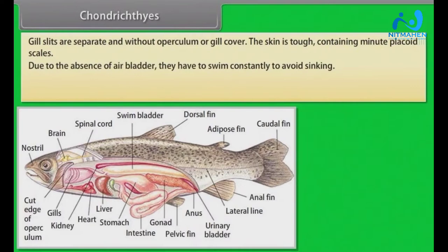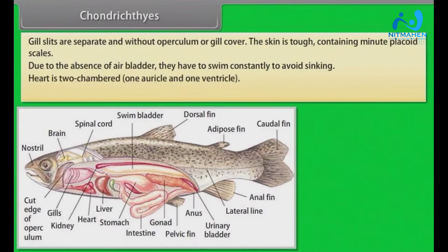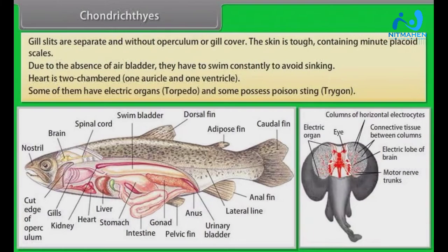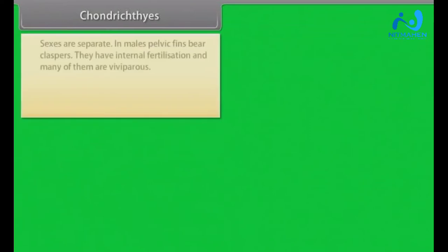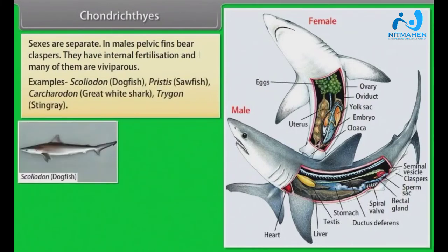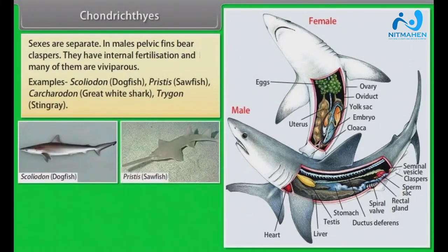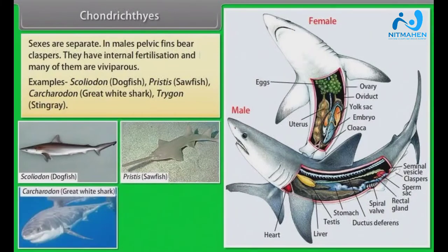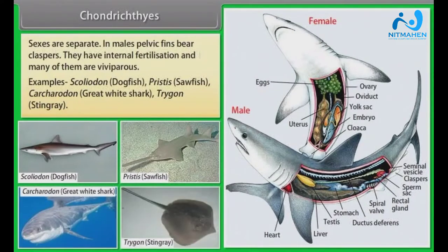Due to the absence of air bladder, they have to swim constantly to avoid sinking. Heart is two-chambered: one auricle and one ventricle. Some of them have electric organs (torpedo) and some possess poison sting (trigon). Sexes are separate. In males, pelvic fins bear claspers. They have internal fertilization and many of them are viviparous. Examples: Scoliodon (Dogfish), Pristis (Sawfish), Carcharodon (Great White Shark), Trigon (Stingray).